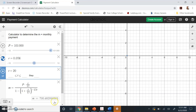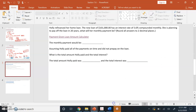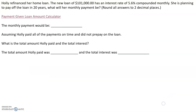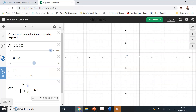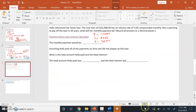So our monthly payment will be $700.48. Let's write down all the inputs. The principal amount is $101,000 — that's how much money she needs to borrow to refinance her home. She gets this at an interest rate of 5.6%, which is 0.056 in decimal form, and the term of the loan is 20 years. We put this in the calculator — payment given loan amount — and that comes out to be $700.48.